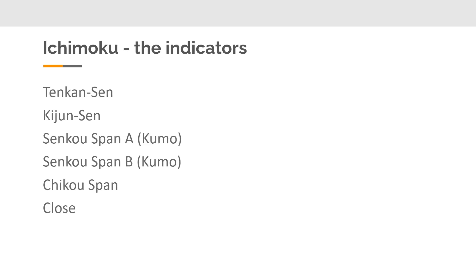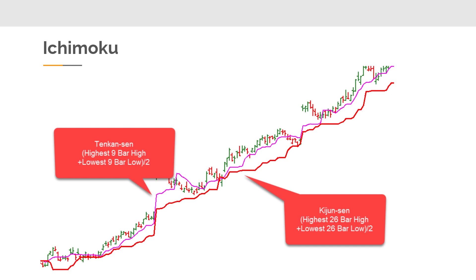When we talk about the Ichimoku method, there are some indicators I'll discuss individually so you understand exactly what they're looking at. The indicators are the Tenkan-sen, the Kijun-sen, the Senkou Span A, and the Senkou Span B, which together form the Kumo. We'll also talk about the Chikou Span. To calculate the Tenkan-sen — the upper purple line — I take the highest bar in the last nine days and the lowest low in the last nine bars, add those together, and divide by two. So I'm looking for the middle of the range for nine days.